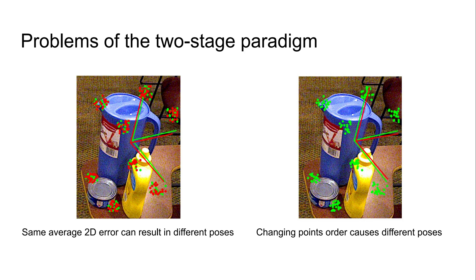Here we show that correspondences that differ but have the same average 2D error can result in different poses. Furthermore, even changing points order causes different poses.